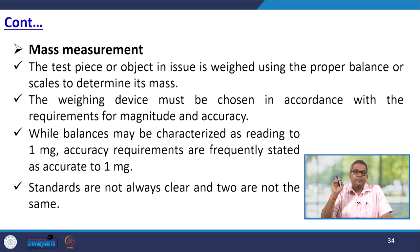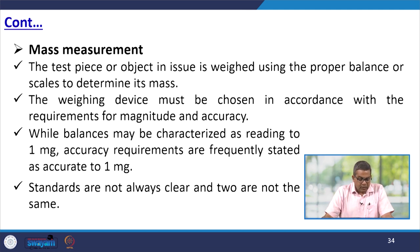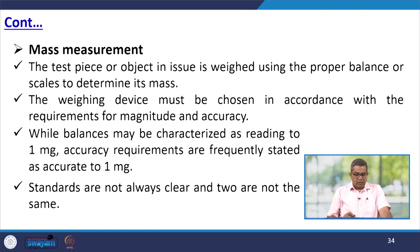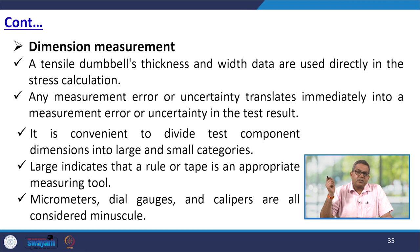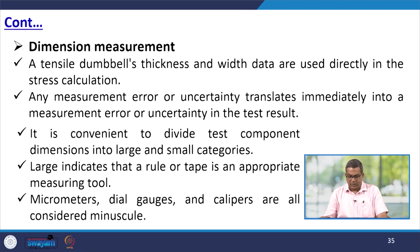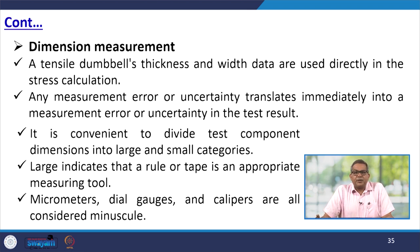Let us talk about mass measurement. The test piece is weighed using a proper balance or scale to determine its mass. The weighing device must be chosen in accordance with requirements for magnitude and accuracy — balances may be characterized by their graduations, and requirements are frequently stated as accurate to 1 milligram. For dimension measurements, tensile dumbbell thickness and width data are used directly in stress calculations. Any measurement error or uncertainty translates immediately into measurement error or uncertainty in the test result.